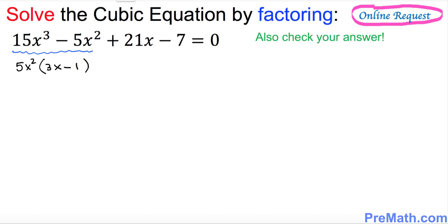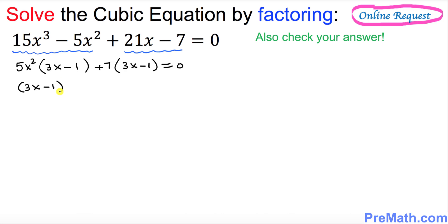Now look at the second pair and see what is in common. You can see positive 7 is in common, so we got 3x minus 1 in parentheses equal to 0. You can see these two parentheses share 3x minus 1 in common, so put it in the front: 3x minus 1 times the quantity 5x squared plus 7, equal to 0.